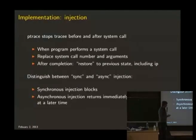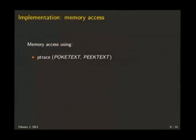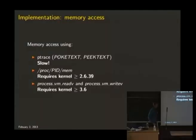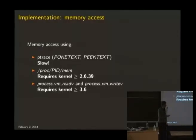We also distinguish between synchronous and asynchronous injection — you can either say inject the system call and wait until it completes, or inject the system call and call this function when you're done, which is nicer for event-based programs. There are different ways of accessing memory when tracing a process: you can use the ptrace system call, but for every word you have to call ptrace which is very expensive. Or you can use the special mem file in the proc filesystem, which is relatively fast and which is what we're using, but you need a somewhat recent kernel for writing to it. As of a very recent kernel, there are also two system calls which allow you to do the same thing.